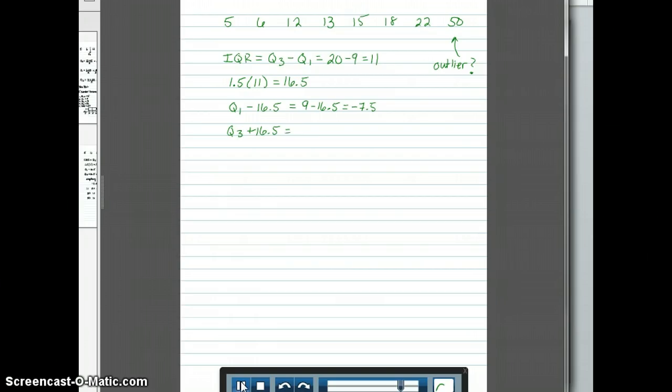Now we're going to take our 16.5 and add it to Q3. Remember Q3 was 20 and 20 plus 16.5 gives me 36.5. Now what this does is it creates an interval of values that are good. So anything between negative 7.5 and 36.5 is good. But anything outside of the interval negative 7.5 to 36.5 is considered an outlier.